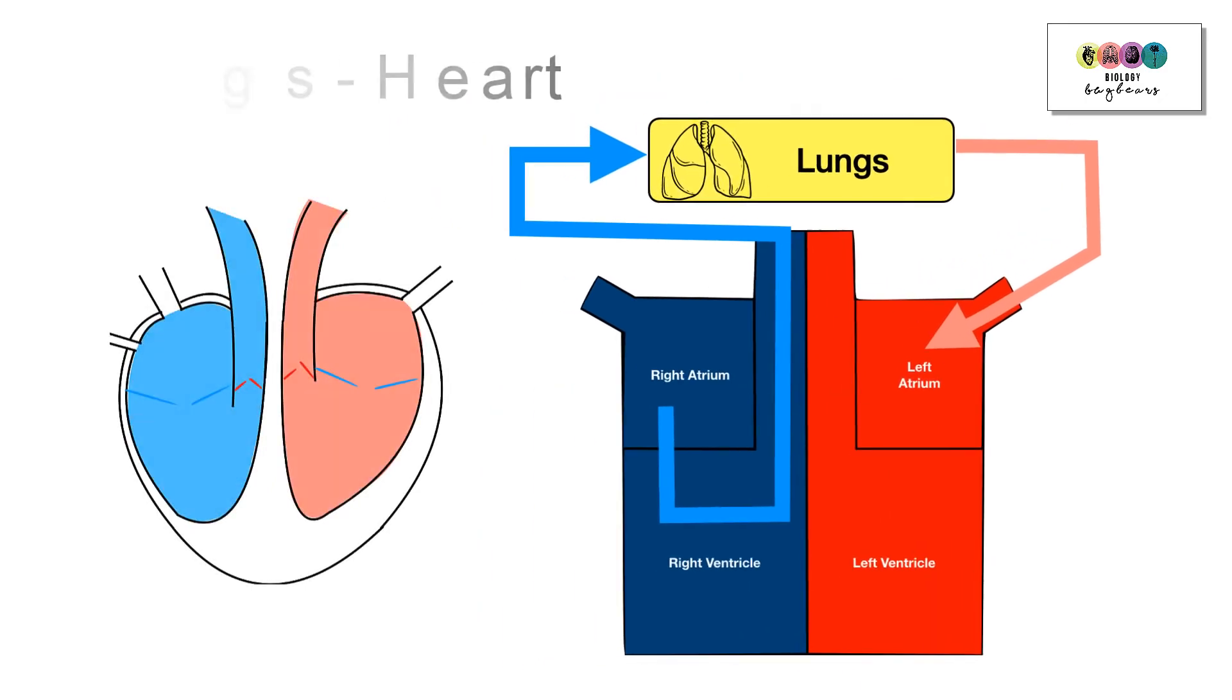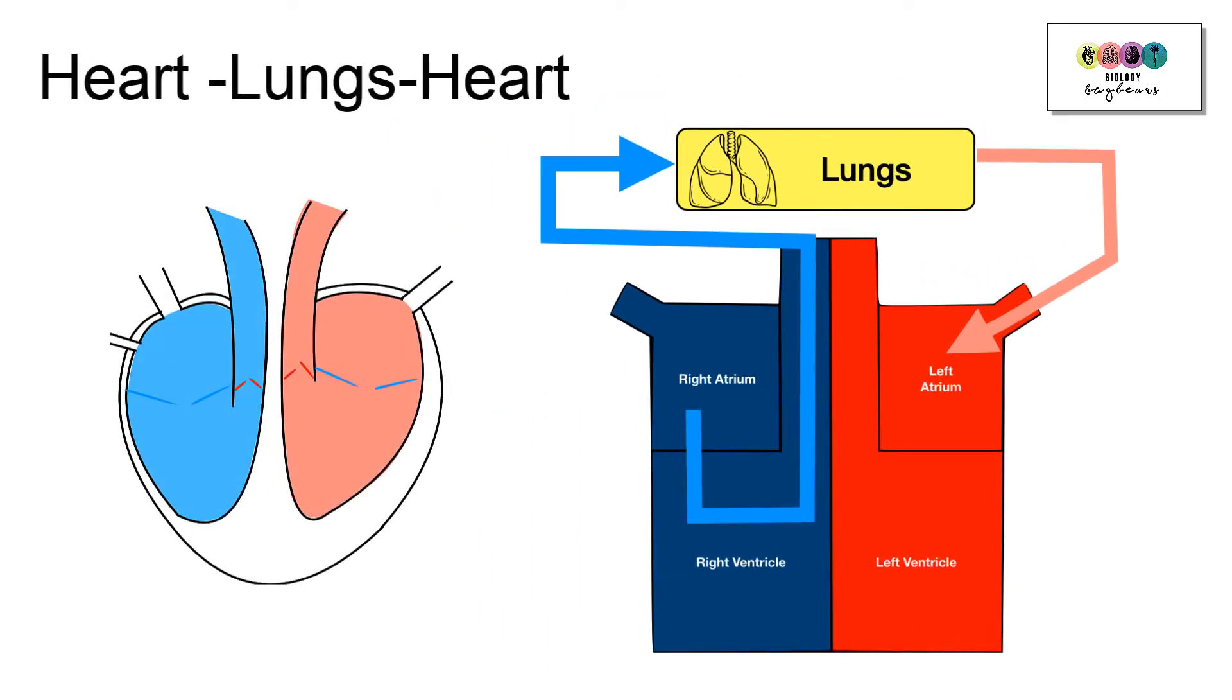So in the pulmonary circuit, the blood is pumped a relatively short distance from the heart to the lungs back to the heart again and that's why the right ventricle wall is not as thick as the left ventricle wall.